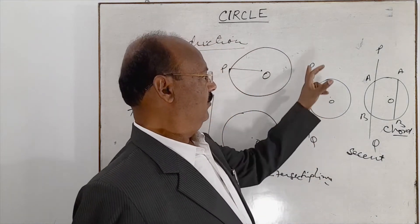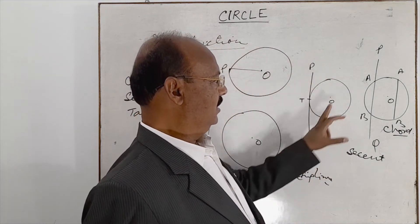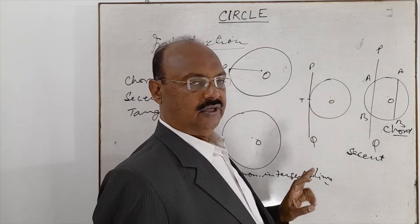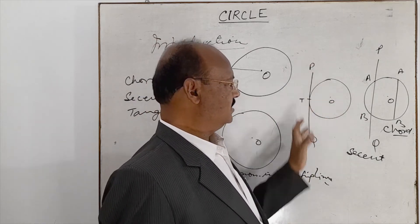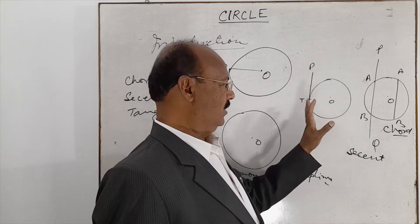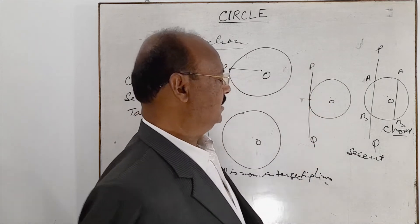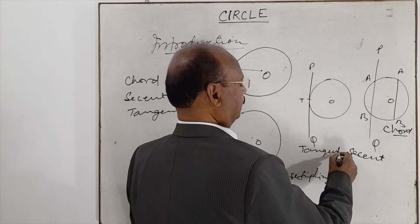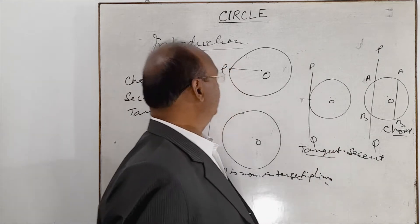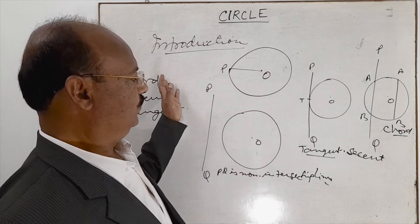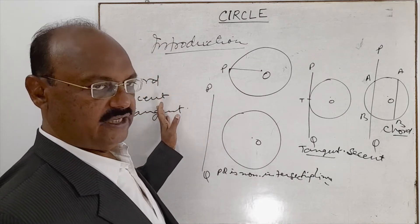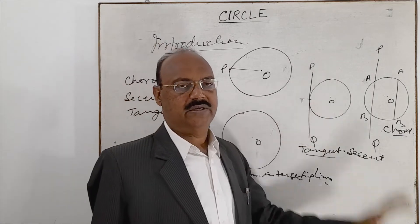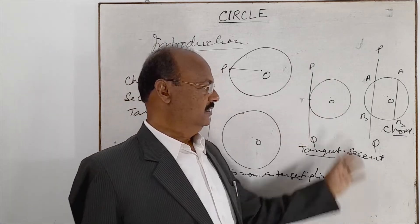When a line PQ intersects a circle at only one point — or you can say it touches the circle at only one point — then this line is known as a tangent. So these are very simple terms: chord, secant, and tangent. These are basic concepts about the circle and these line segments.